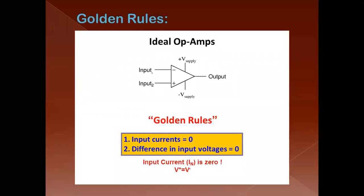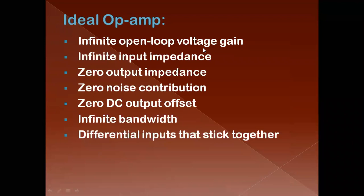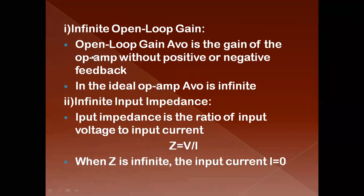Since VD = 0, we have V1 − V2 = 0, meaning V1 equals V2. These are the rules to follow to analyze the op-amp in an ideal manner. For the ideal op-amp, the first characteristic is infinite open loop voltage gain. The open loop gain is the gain when there is no feedback. Since the difference voltage VD is zero, using AD = V0 / VD, something divided by zero gives infinite gain.